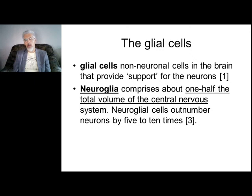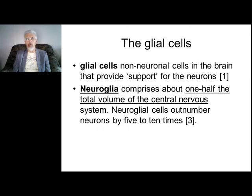Next very important tissue in the brain: glia and glial cells. These are not neuronal cells — they support neurons. Neuroglia consists of different cell types, and the volume of glial tissue in the nervous system is near 50%.